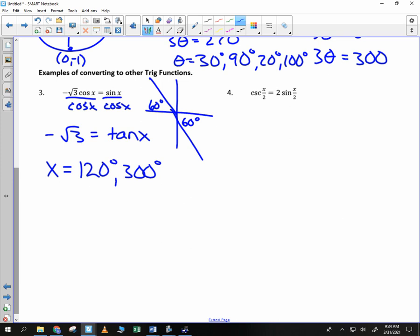What's the relationship between sine and cosecant? They're reciprocals, right? Let's say I divide both sides by cosecant of x over 2. What's cosecant of x over 2 divided by cosecant of x over 2? 1. And then sine divided by cosecant - cosecant is 1 over sine. If you divide those, do they cancel? No. You get sine squared. So we get 2 sine squared of x over 2. And that's our new equation.